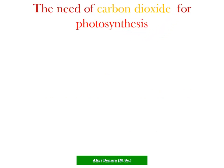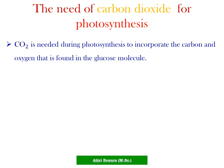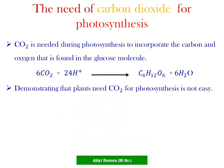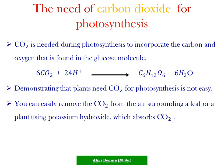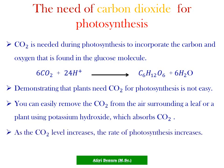The need of carbon dioxide for photosynthesis. Carbon dioxide is needed during photosynthesis to incorporate the carbon and oxygen found in glucose molecules. When combined with hydrogen from water, it forms glucose and water. Demonstrating that plants need carbon dioxide is not easy, but we can remove it from the air around the leaf using potassium hydroxide, which absorbs carbon dioxide. As carbon dioxide levels increase, the rate of photosynthesis also increases.